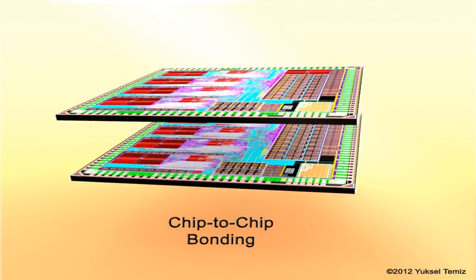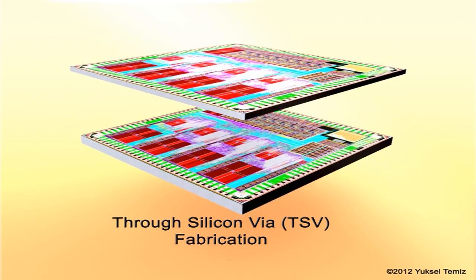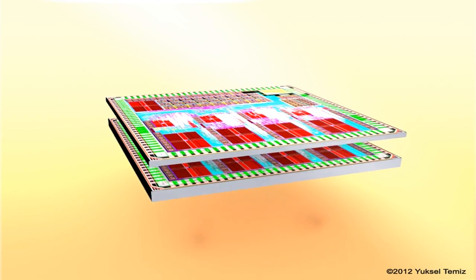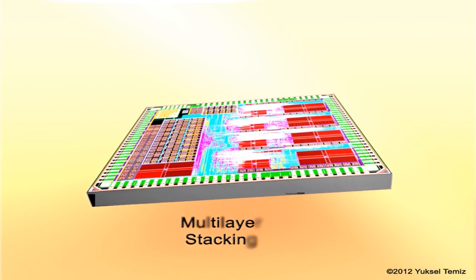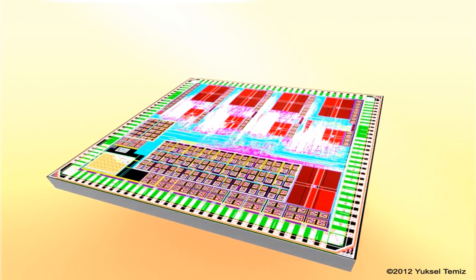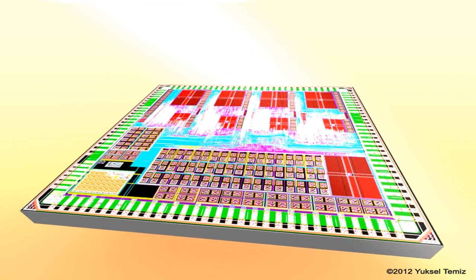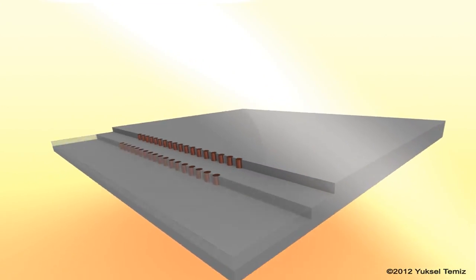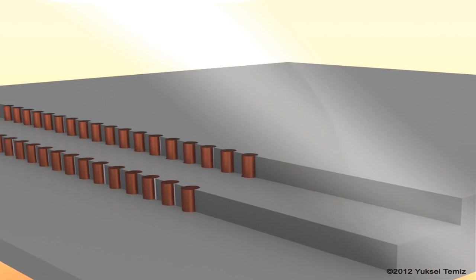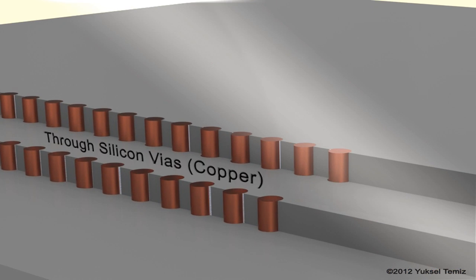And then we form the so-called through-silicon-via openings, or TSV openings, on the silicon surface. Later we use copper electroplating for forming the electrical connections between the layers. We are able to produce hundreds or thousands of these TSVs side-by-side on the surface.